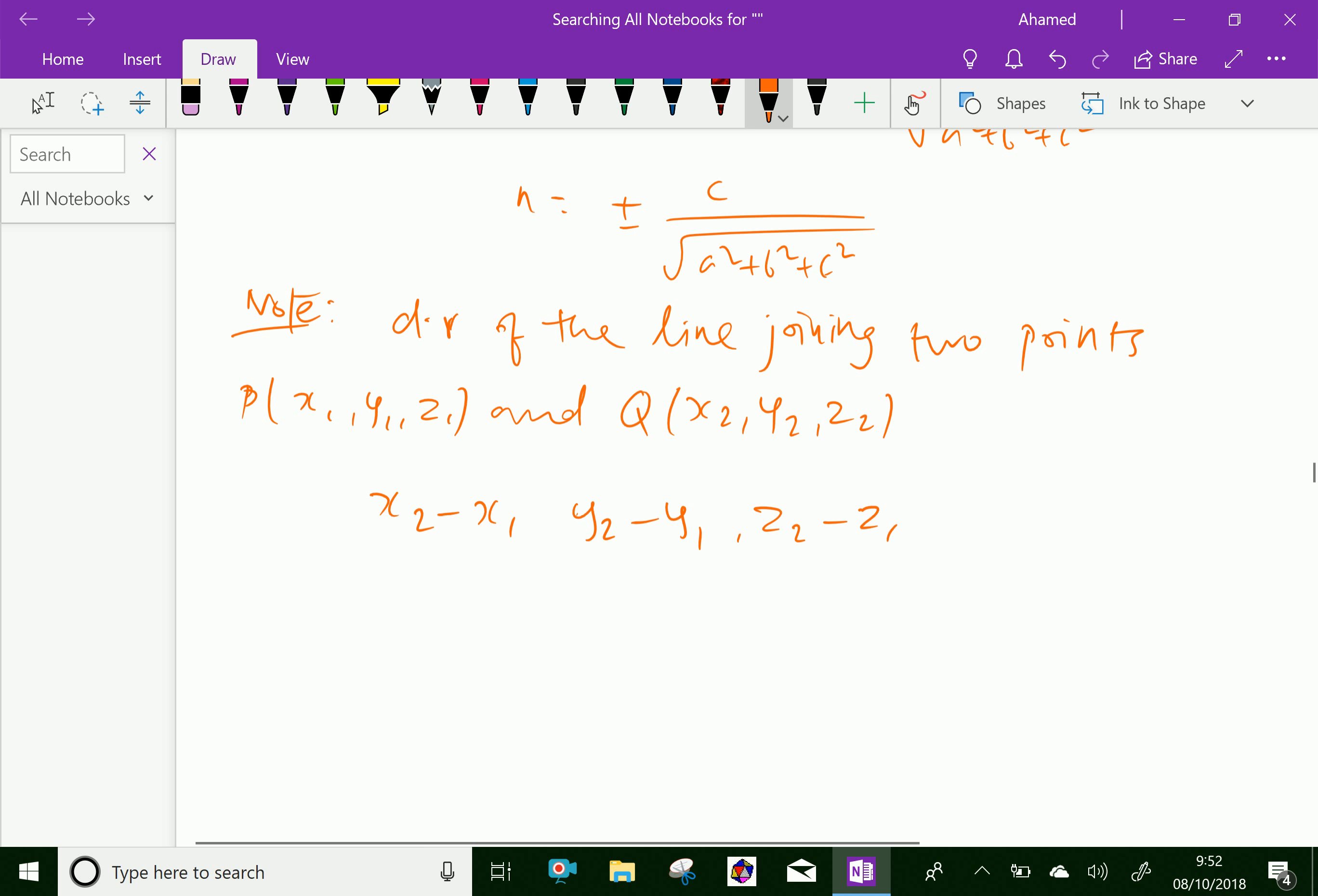Therefore, D.R. of PQ is proportional to X2 minus X1, Y2 minus Y1, and Z2 minus Z1.